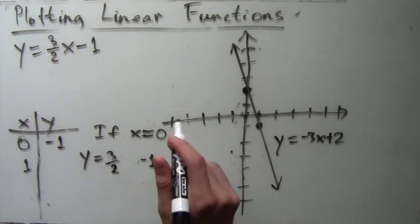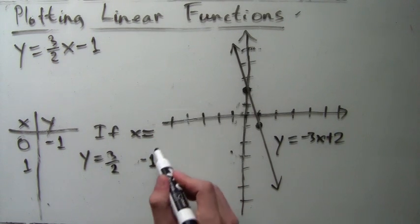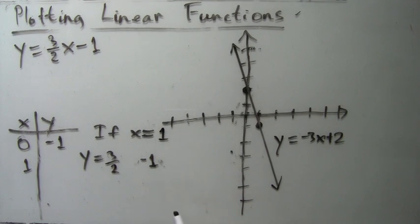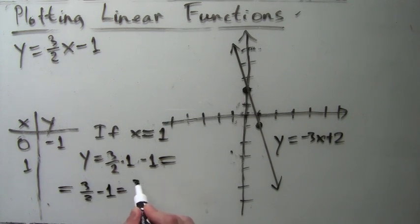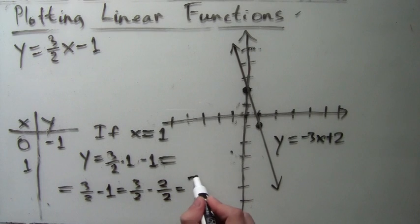If x equals 1, then y equals (3/2) times 1 minus 1. So we simplify this. Anything times 1 is itself, so it's just 3/2 minus 1. And then 1 is the same as 2/2, and now we can finish the calculation. So y equals 1/2.